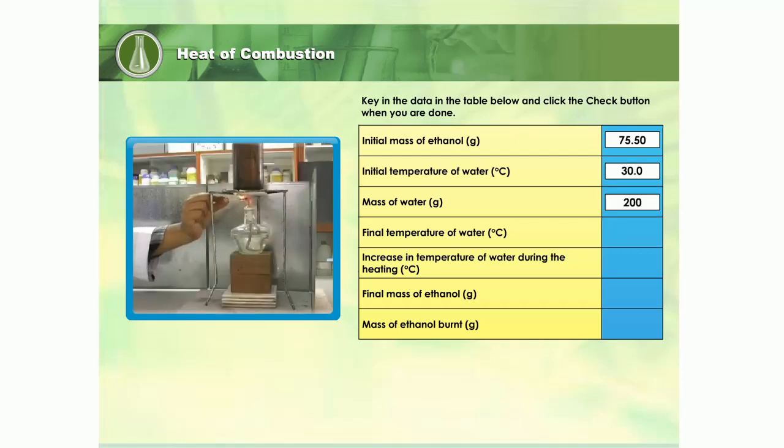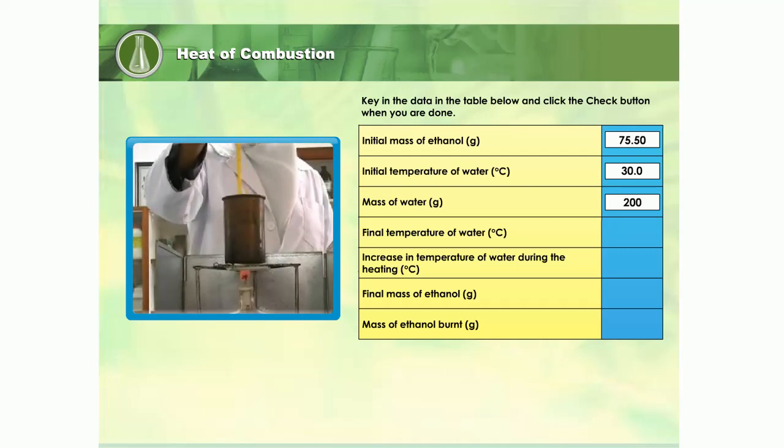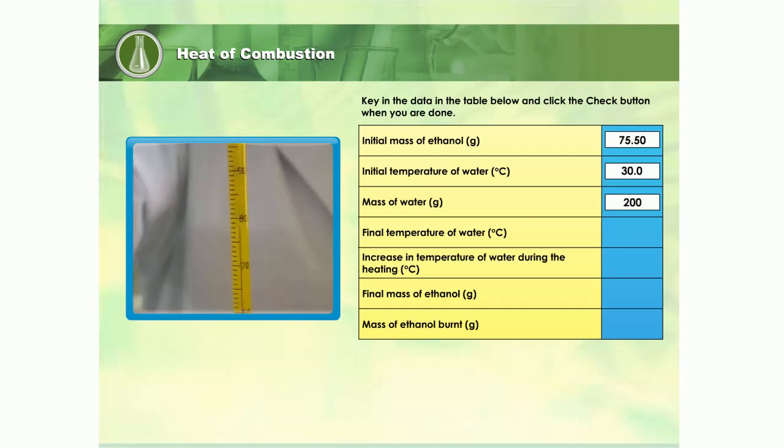The burner is placed below the copper can and then lighted to heat the water efficiently. The water is stirred until its temperature increased by about 50 degrees Celsius. Record the final temperature of the water in the table. What is the difference in temperature during the reaction?